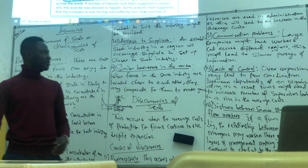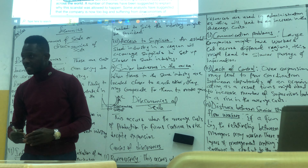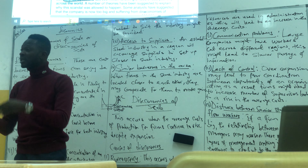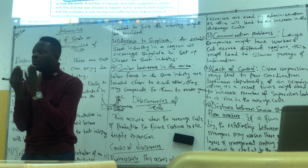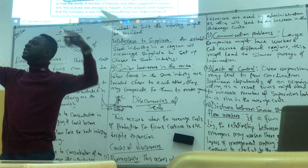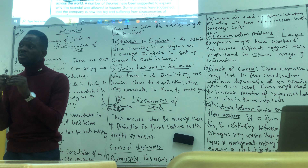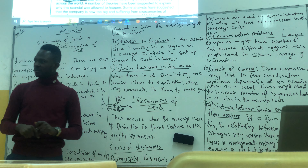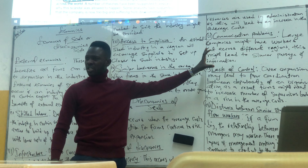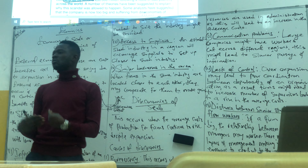Number two: communication problems. As businesses become bigger and larger, they have more workers and more outlets in different regions. Because the number of workers and outlets continues to increase, this might lead to slower communication. For example, if this school has another branch in Misrata, another in Tobruk, and different places across Libya, it might be difficult for communication to pass across quickly. Because communication is not being passed across fast, it might lead to diseconomies of scale.